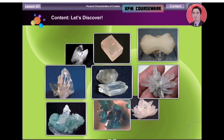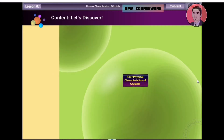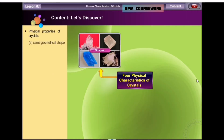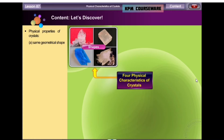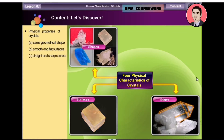Crystals exist in many shapes, sizes and colours. The sizes of crystals vary depending on the rate of crystallization. There are four physical characteristics of crystals. Click on the red button to know about these physical characteristics.